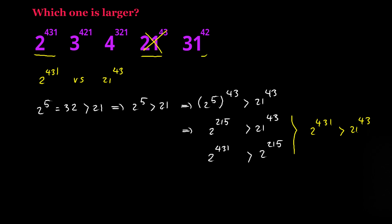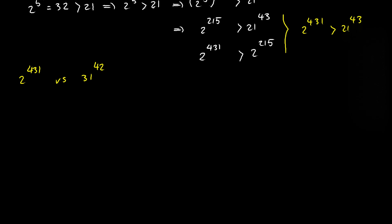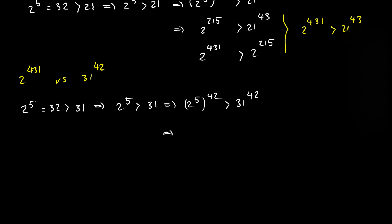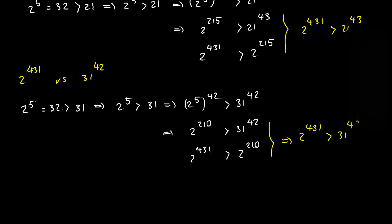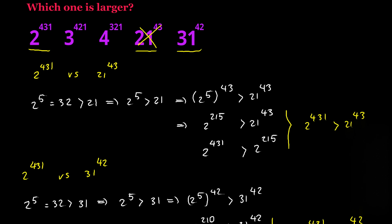Next I'm going to compare the first number with the last number — 2 to the power of 431 with 31 to the power of 42. I'll use the same approach: 2 to the power of 5 equals 32, and 32 is greater than 31, so 2 to the 5th power raised to the power of 42 gives 2 to the power of 210, which is larger than 31 to the power of 42. Since 2 to the power of 431 is greater than 2 to the power of 210, by the transitive property 2 to the power of 431 is greater than 31 to the power of 42, so the last number cannot be the largest.